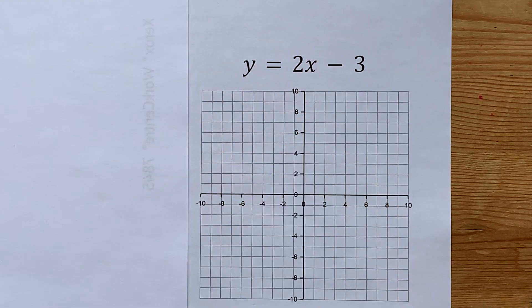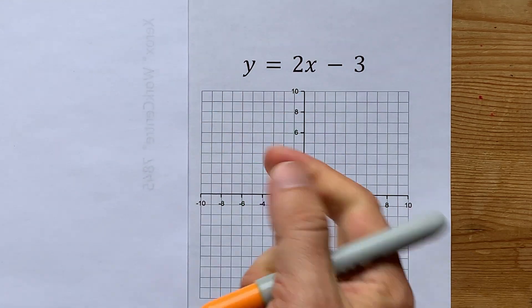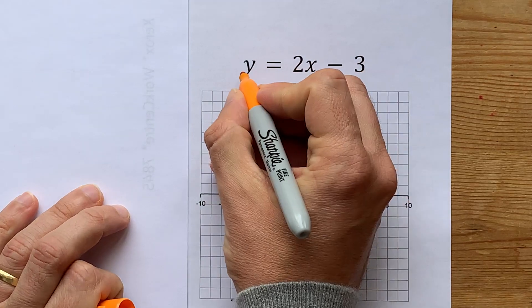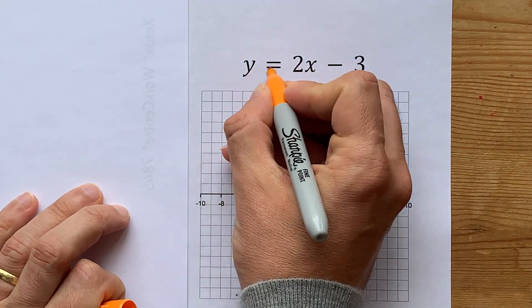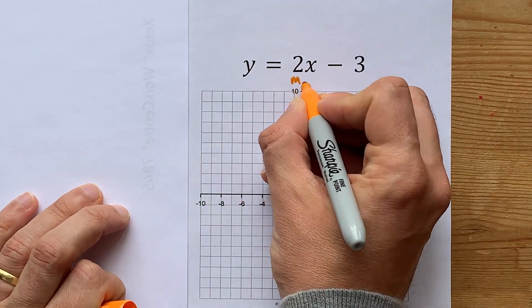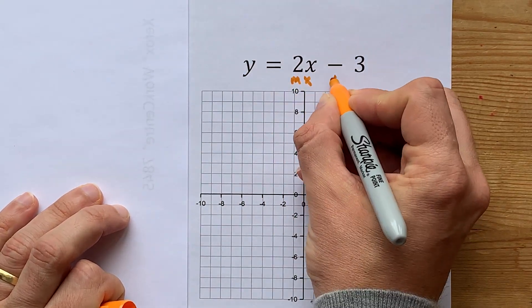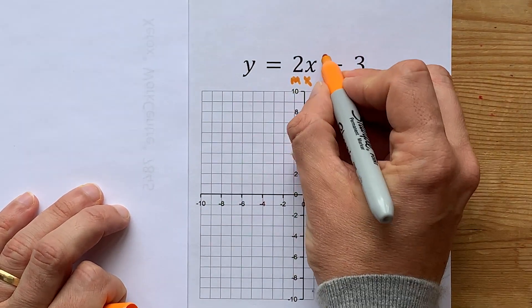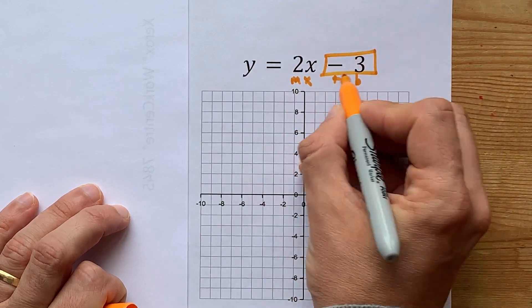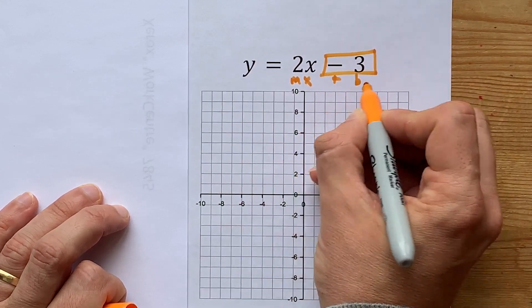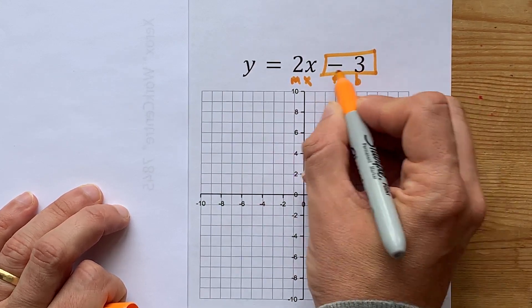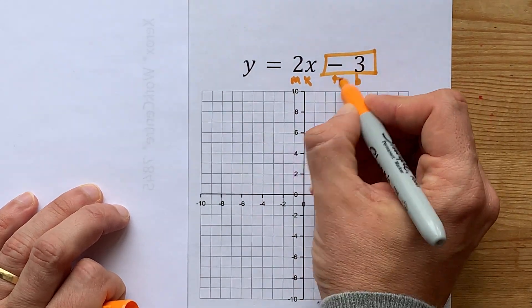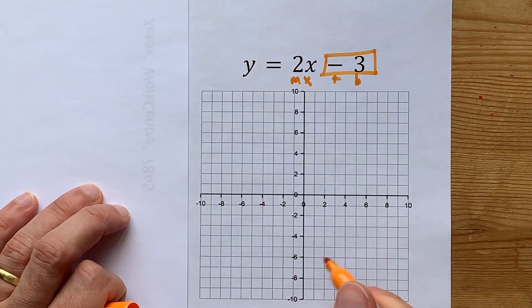y equals 2x minus 3 is the equation of a line. It's already in y equals mx plus b form, which means you can read the b or y-intercept directly from the equation. The y-intercept here is negative 3.